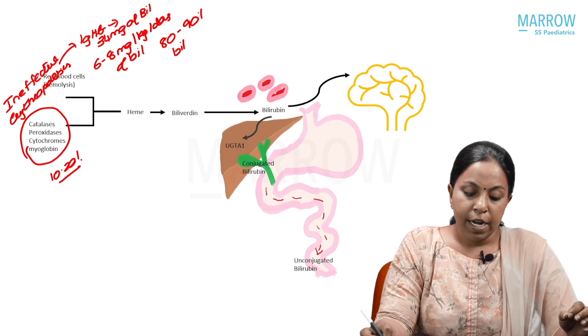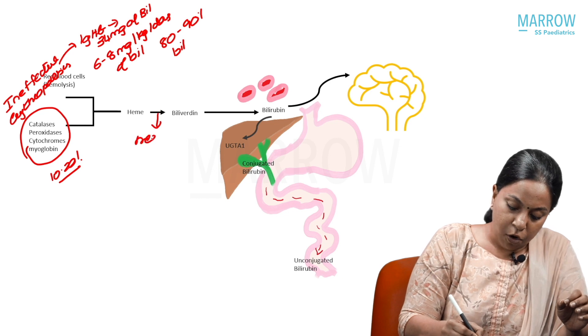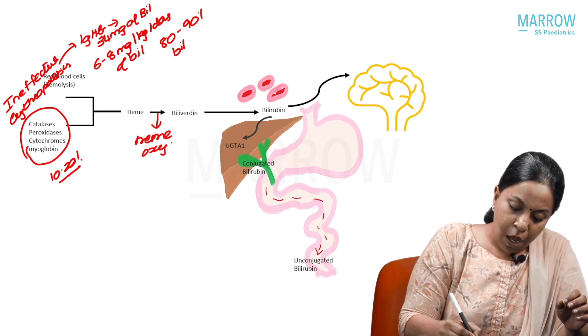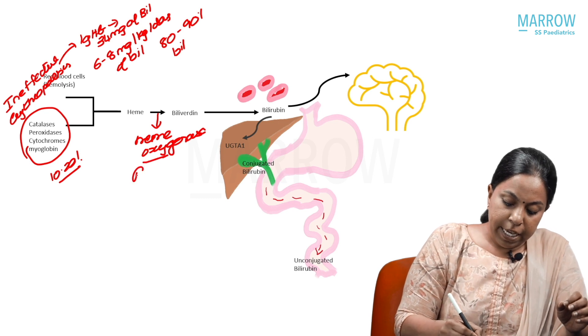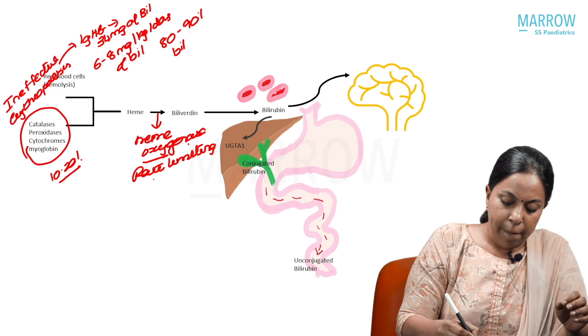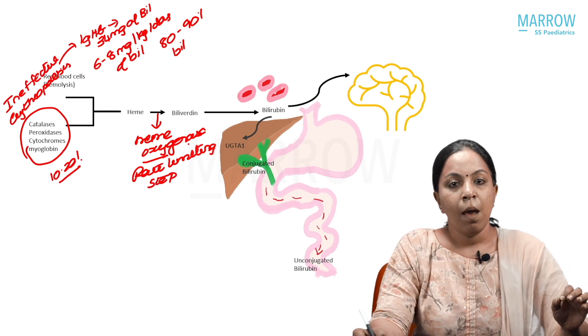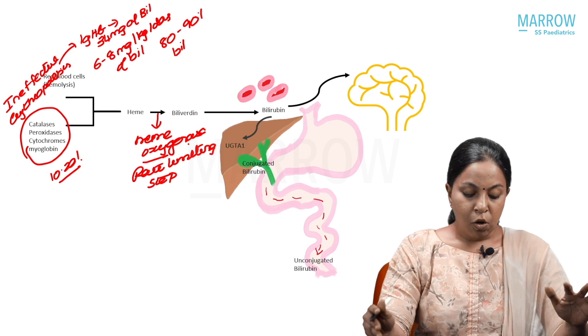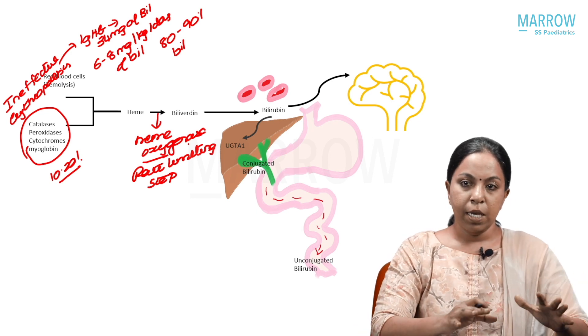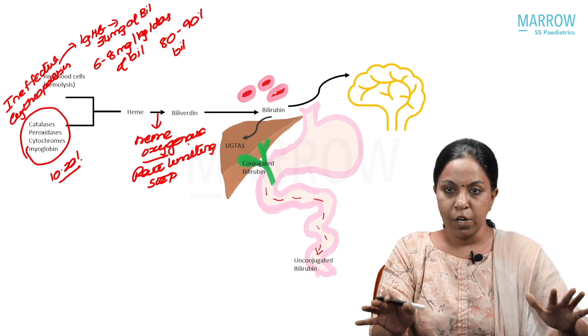This heme is converted into bilirubin by an enzyme called heme oxygenase. For all exam purposes, the heme oxygenase is a rate-limiting step in bilirubin metabolism. RBCs produce heme, heme is converted into biliverdin, biliverdin is converted into bilirubin.